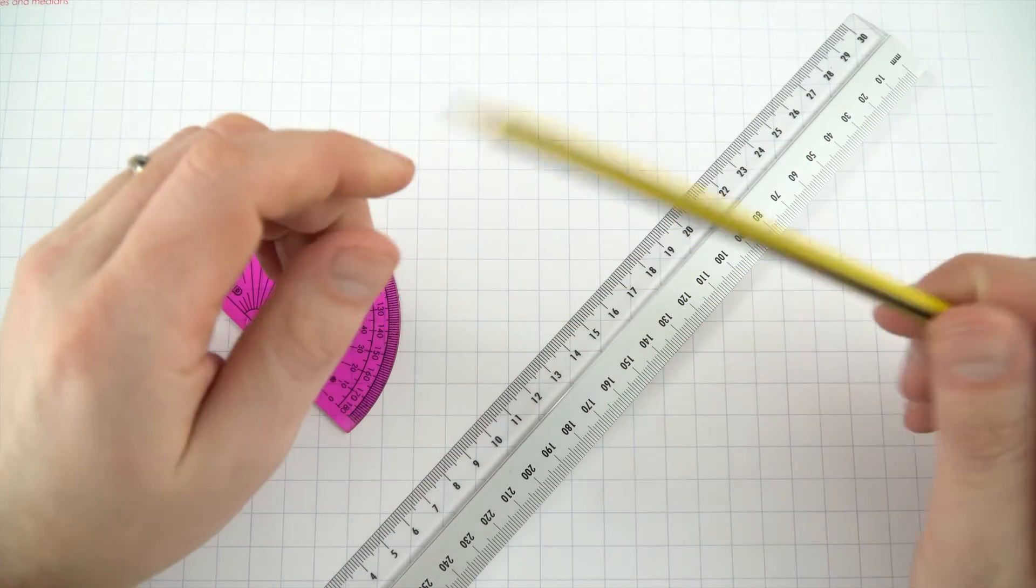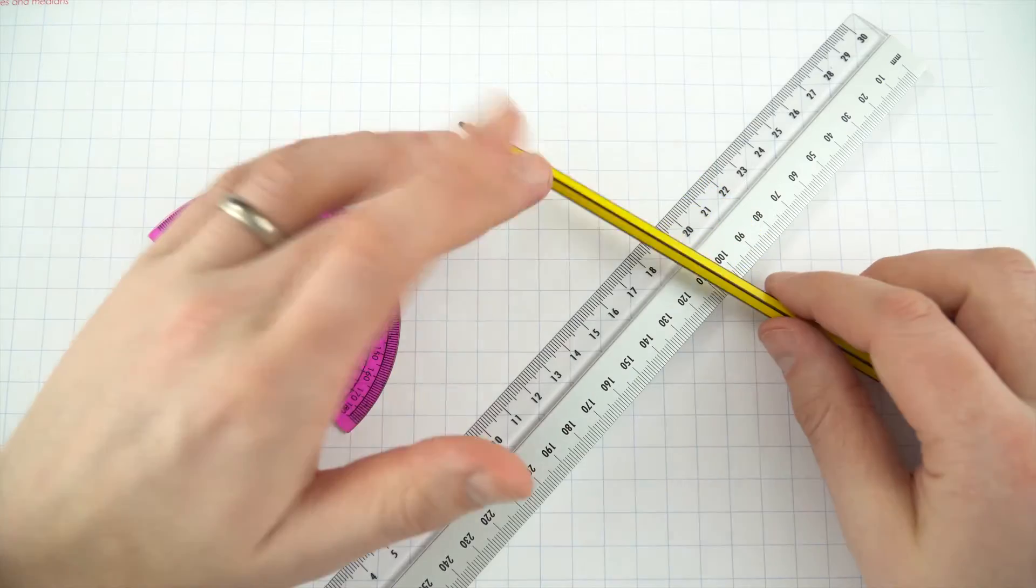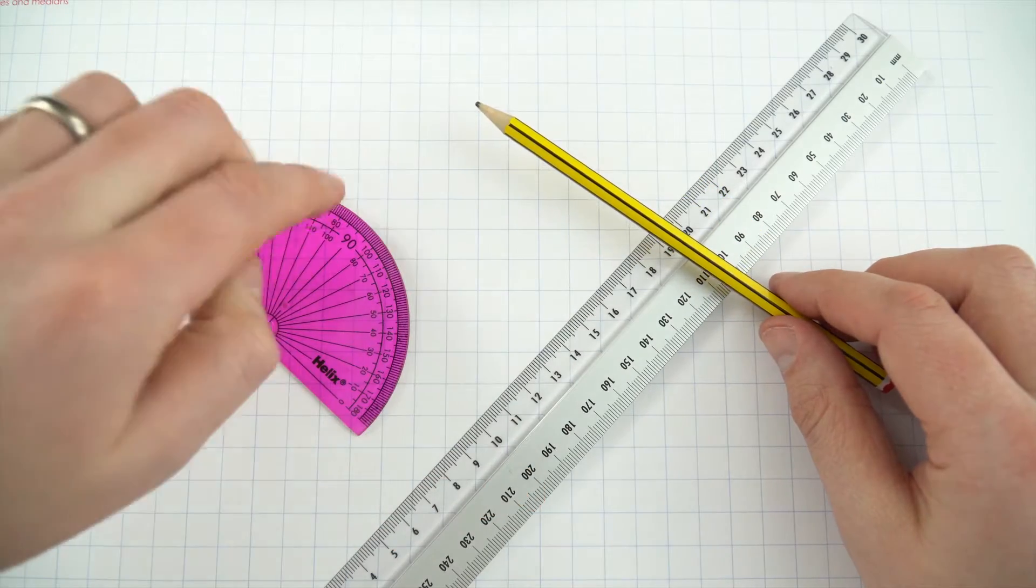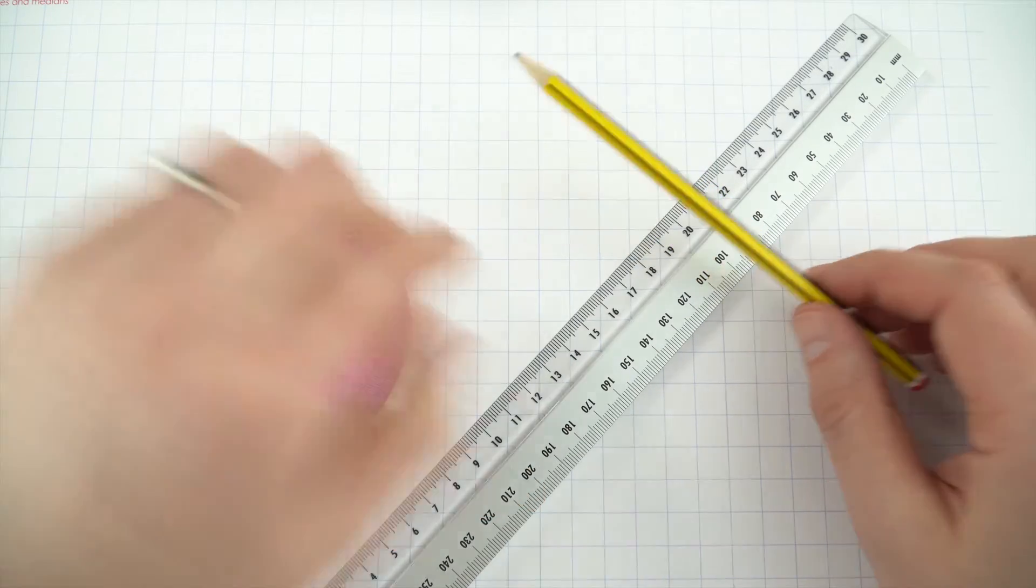Now you just need three things. You need a pencil, so if you make a mistake you can rub out any mistakes, a protractor if you're looking at things at a certain angle, and finally a ruler.